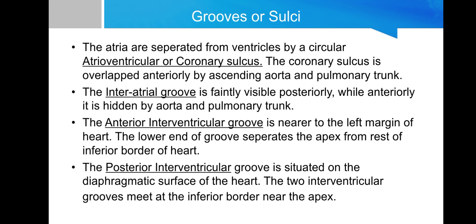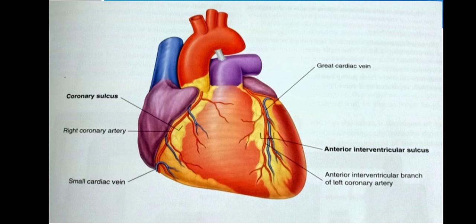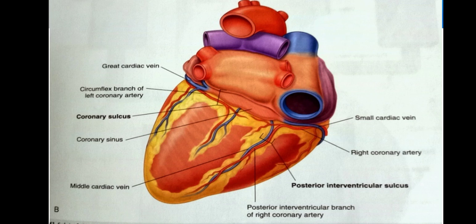The posterior interventricular groove is situated on the diaphragmatic or inferior surface of the heart. The two ventricular grooves meet at the inferior border near the apex. In this diagram, we can clearly see the labeled coronary sulcus separating the right and left atria, and on the left side the anterior interventricular sulcus is marked, along with the anterior interventricular branch of the left coronary artery and the great cardiac vein. In another picture from the posterior view, we can see the posterior interventricular sulcus separating the two ventricles posteriorly, as well as the coronary sulcus separating the two atria.